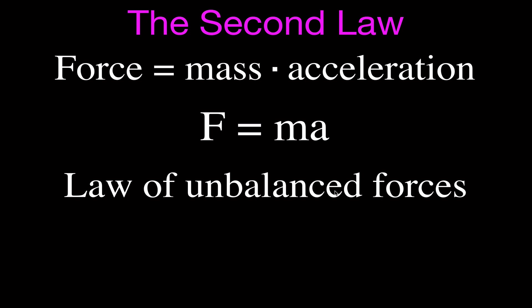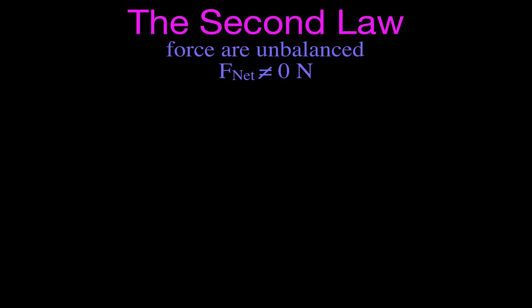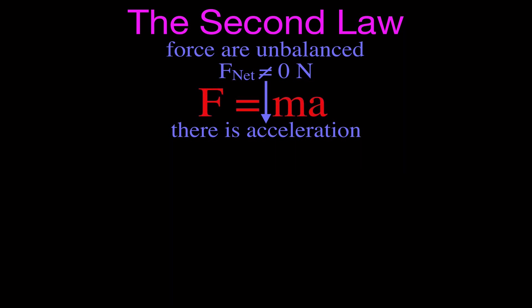Oftentimes when we're talking about Newton's second law, we want to calculate the acceleration, so it's interesting to think about the relationship between the acceleration, the mass, and the force. When the forces are unbalanced, the net force is not equal to zero and you are going to be accelerating — either your direction or your speed is going to be changing. When you're accelerating, we're going to use Newton's second law, F equals MA, and rearrange it to solve for the acceleration.